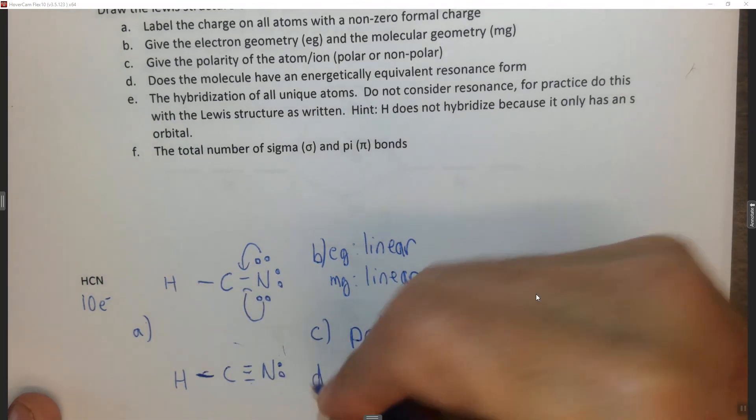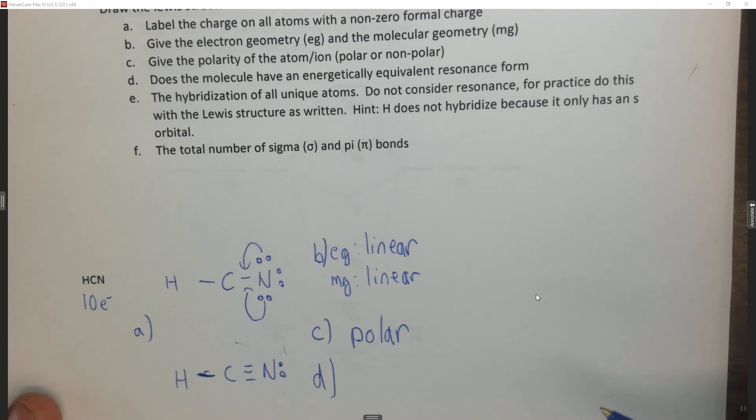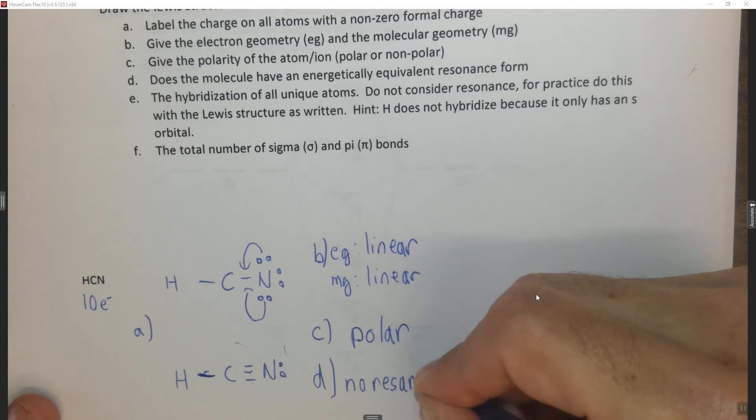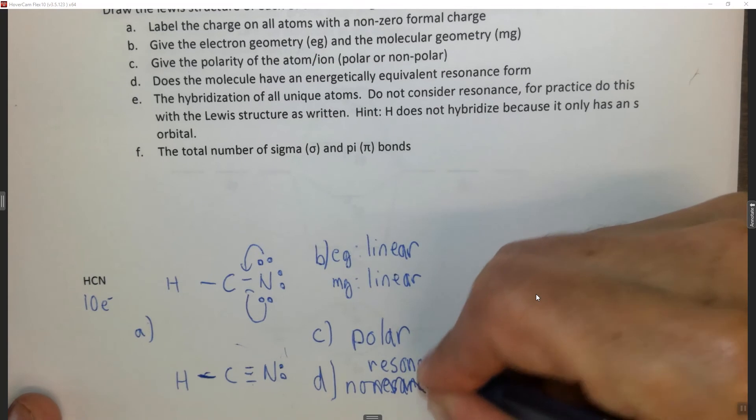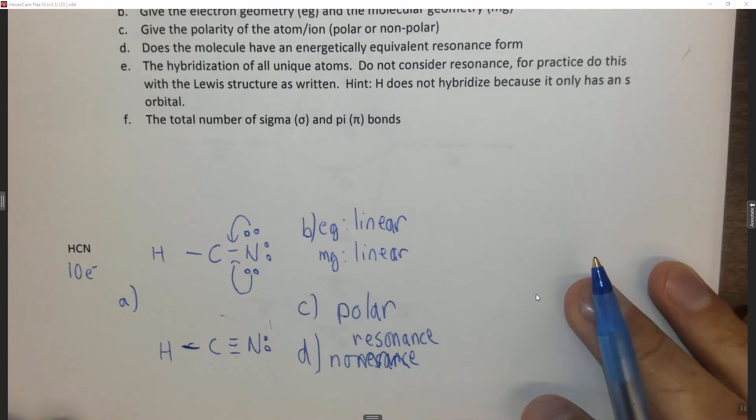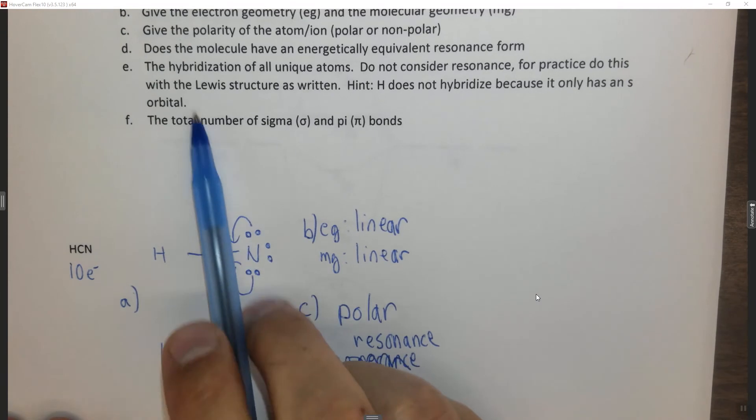D. Does the molecule have energetically equivalent resonance form? The answer here is no. So this is no resonance. We do not have a double bond that could be in multiple locations. Triple bonds can't resonate, because we can't have the bond go over here and have a double bond with hydrogen. Hydrogen can't do that.